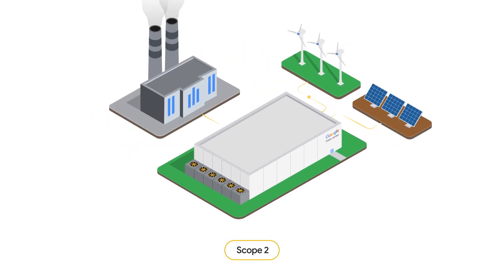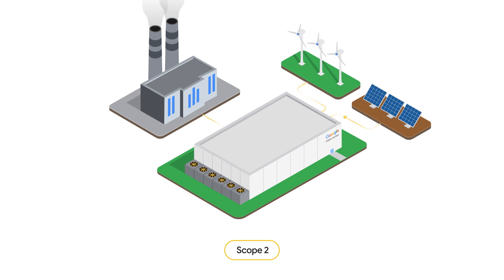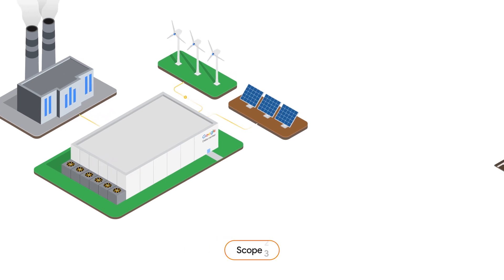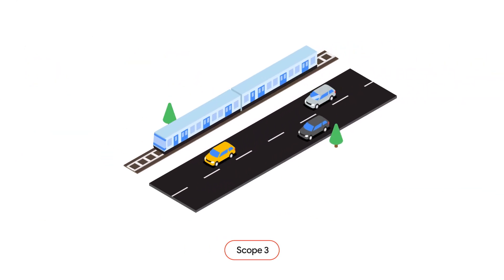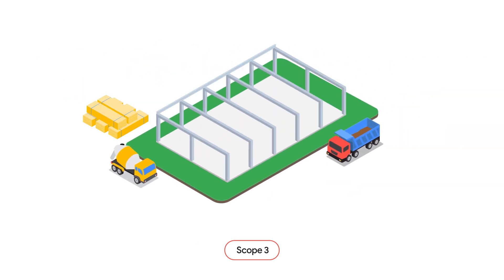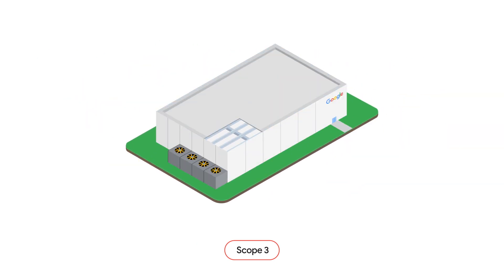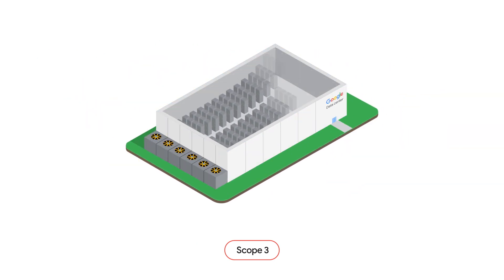Scope 2 covers emissions resulting from the power plants that provide electricity to our data centers. Scope 3 covers indirect emissions from employee travel, building our data centers, and filling them with servers. These emissions are the direct emissions of our suppliers.